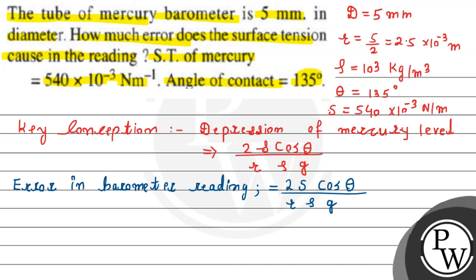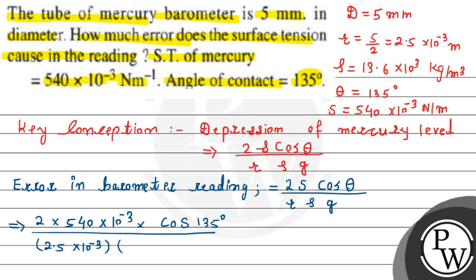Here I am writing: 2 × surface tension, which is 540 × 10⁻³ × cos 135° divided by radius 2.5 × 10⁻³ m × density. Let me do one correction here - this should be density of mercury, not water. Density of mercury is 13.6 × 10³ kg/m³. So substituting: 13.6 × 10³.